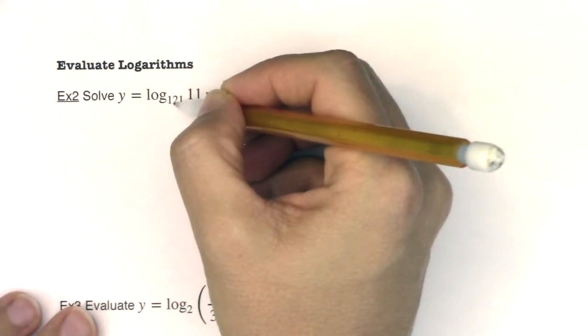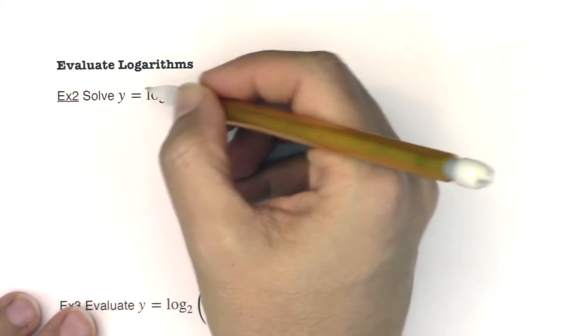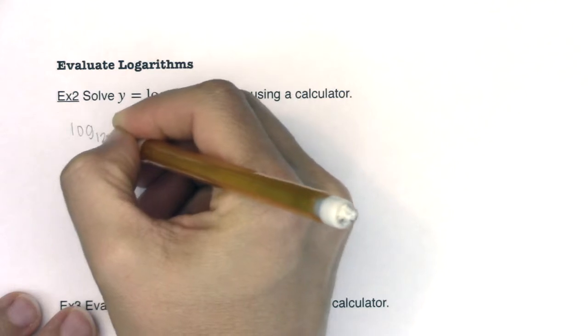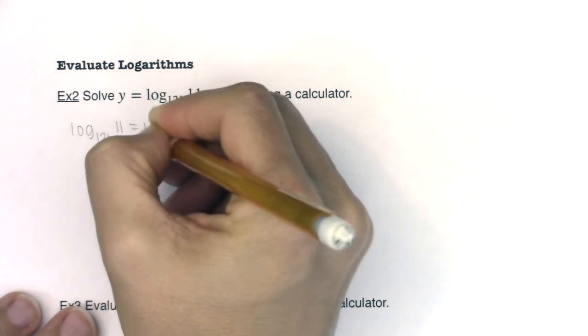So let's take a look at this. We have LOG base 121 of 11 is equal to y. And I'm actually going to write it in the other order: LOG base 121 of 11 is equal to y.